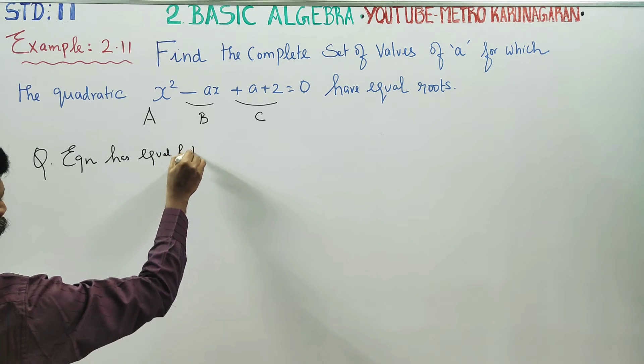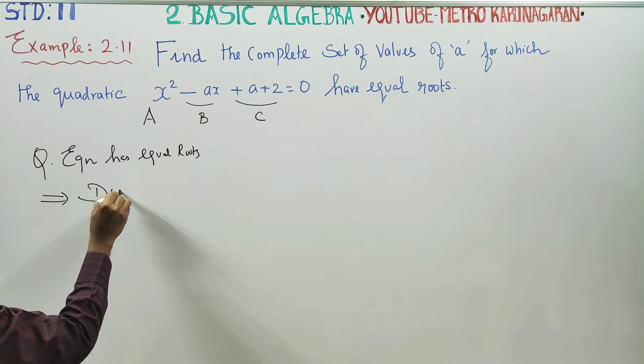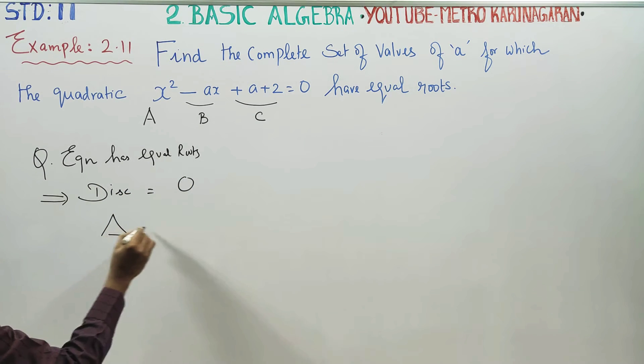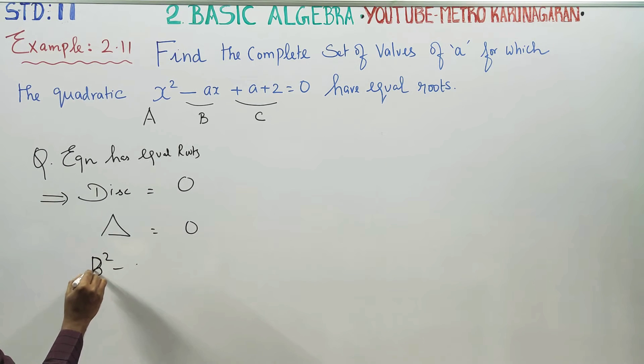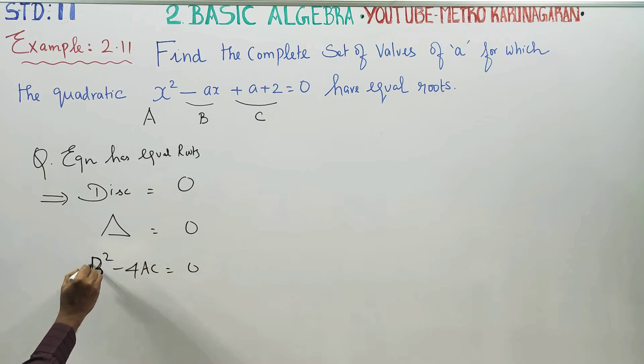Equal roots. When the quadratic equation has equal roots, our discriminant disc is equal to 0. Discriminant delta is equal to 0. Delta is B square minus 4AC. B square minus 4AC is equal to 0. Now, let me write in capital letters. B square minus 4AC must be equal to 0.